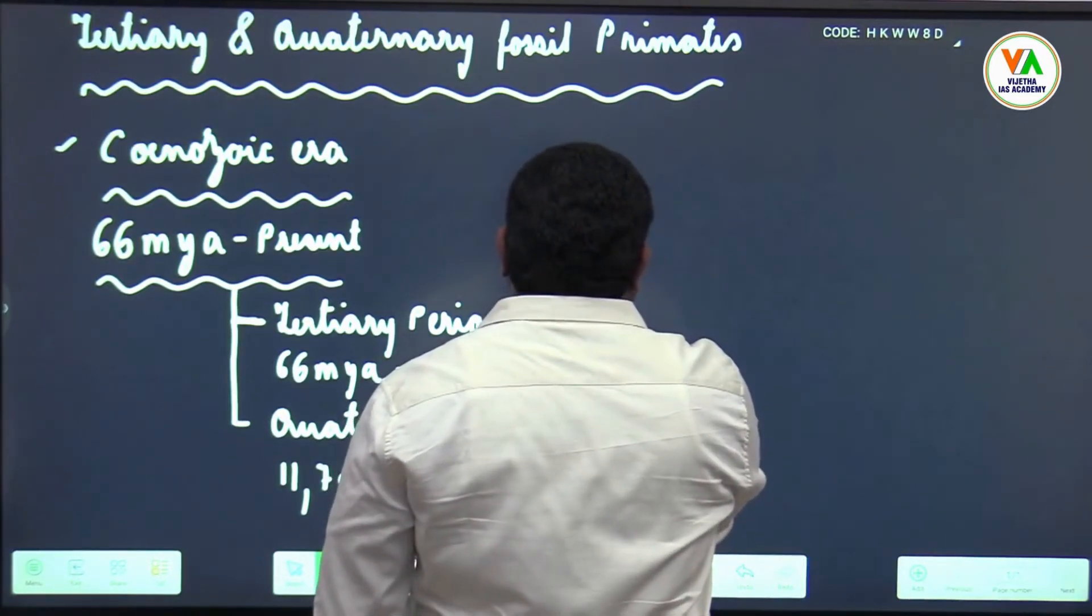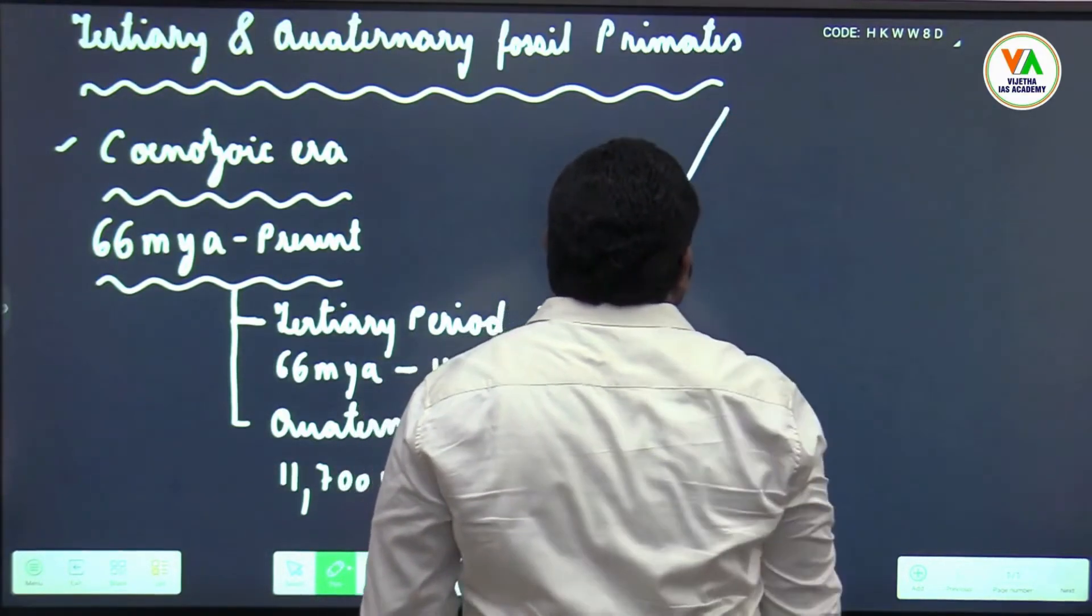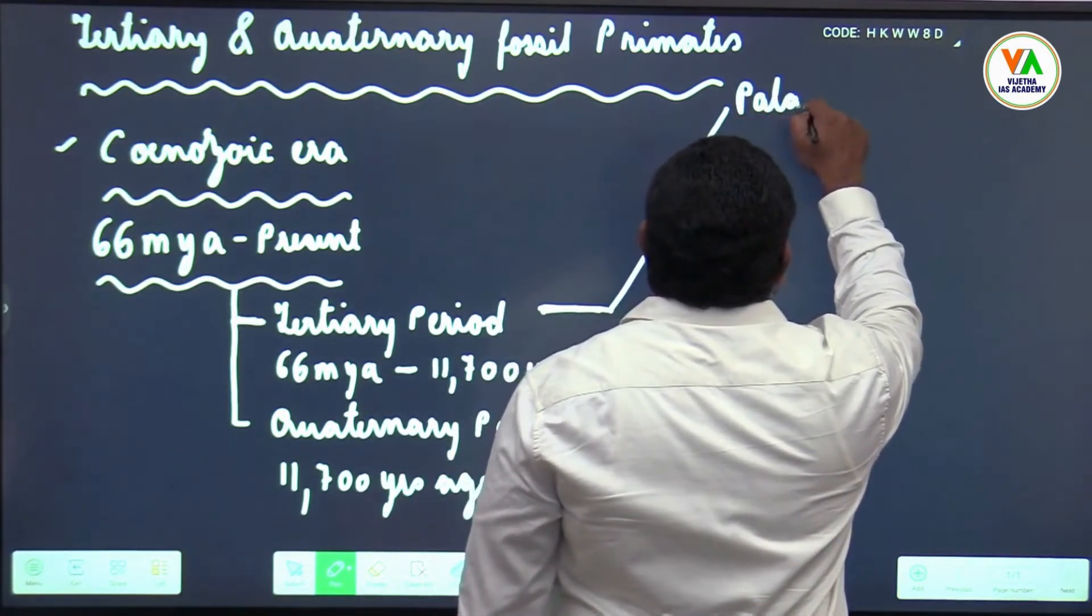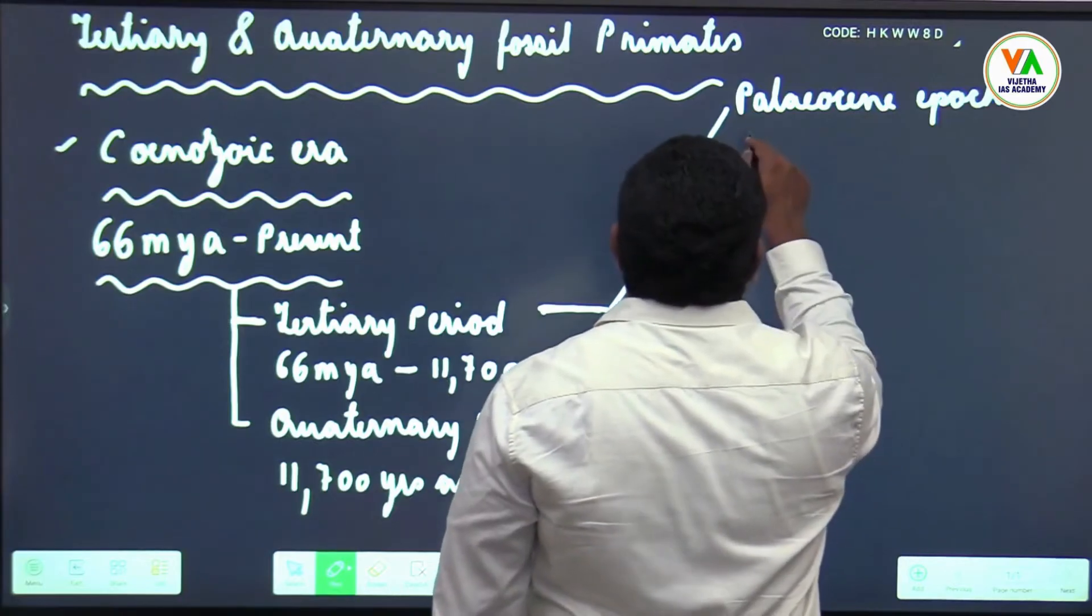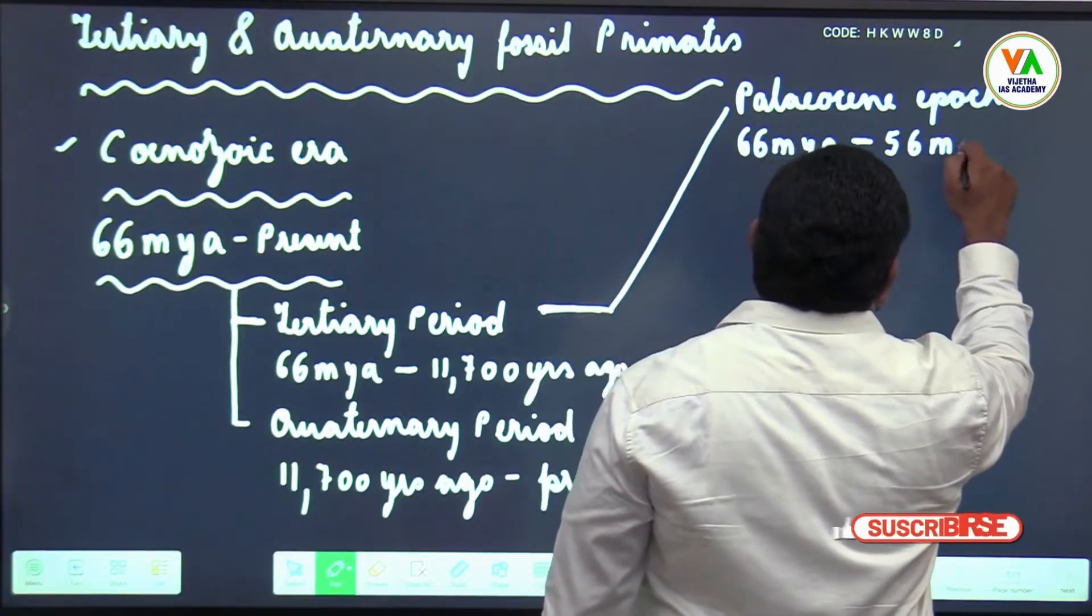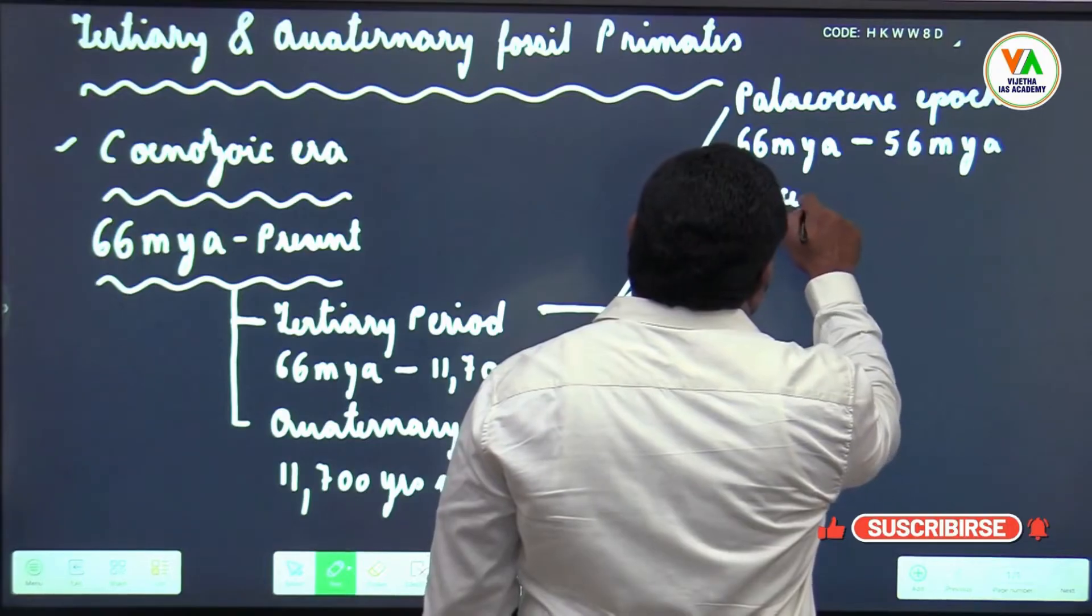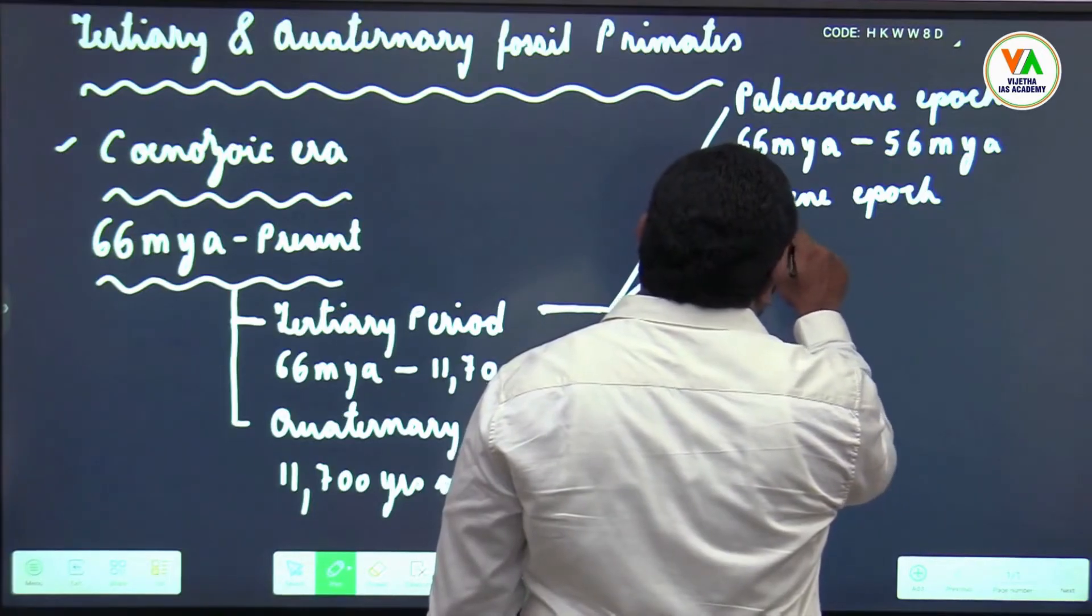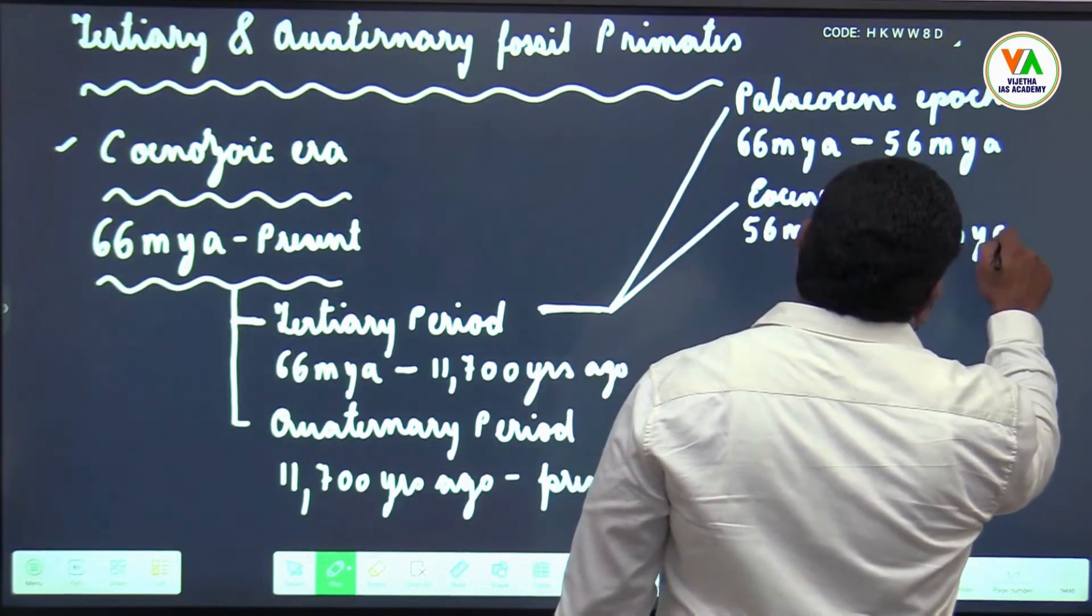In the tertiary period you have different epochs. You have Paleocene epoch, which is 66 million years ago to 56 million years ago. Eocene epoch is 56 million years ago to 34 million years ago.